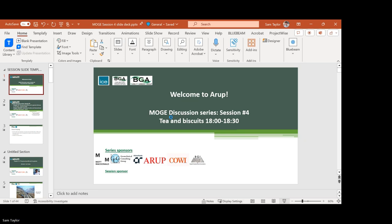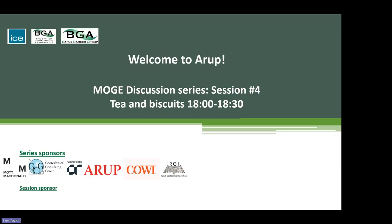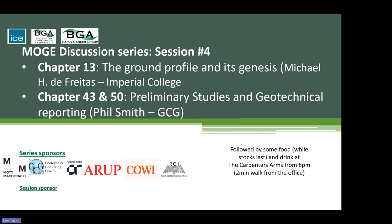Welcome everyone to Arup. This is session four of the BGA Early Careers Mogi discussion series. Today we have two presenters for chapters 13, 43, and 50. Michael De Freitas from Imperial College will be talking about the ground profile and its genesis, and Phil Smith from GCG will be talking about preliminary studies (chapter 43) and geotechnical reporting (chapter 50).